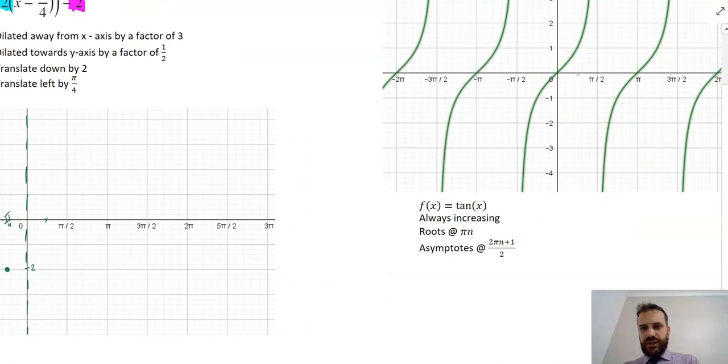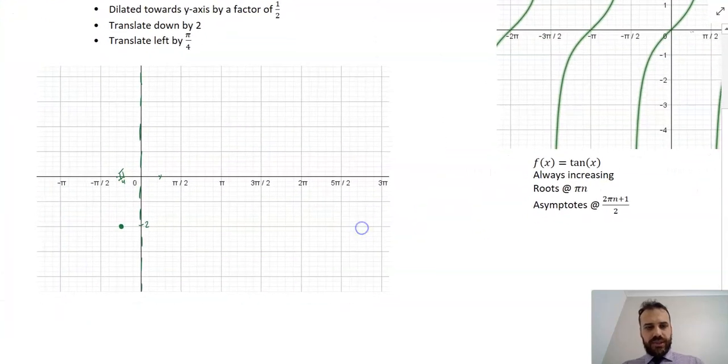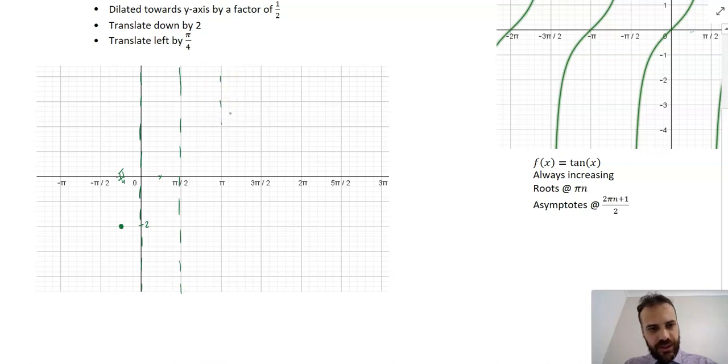And I'm going to get asymptotes every π/2 because generally it used to be a distance of π between asymptotes, but because this has been stretched out, it's now going to be asymptotes every π/2. And obviously that counts for negatives as well. So I have some asymptotes.